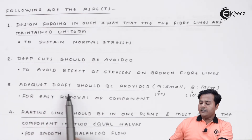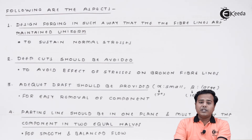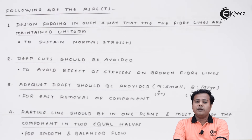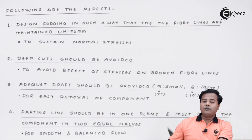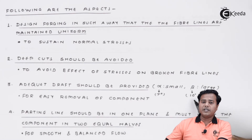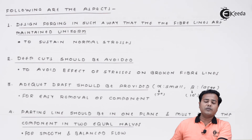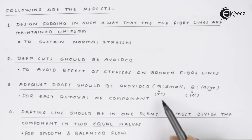The next thing is that adequate draft should be provided — that is, the angle of draft. The actual die has a draft angle for easy removal of the product. There are two types of draft angles: alpha and beta. Alpha is the outer draft and beta is the inner draft. The outer draft for steels generally remains in the range of 7 degrees, and the larger angle remains around 10 degrees. This is essential for easy removal of the component, so when designing a forging die we should ensure the angles are maintained in that region.